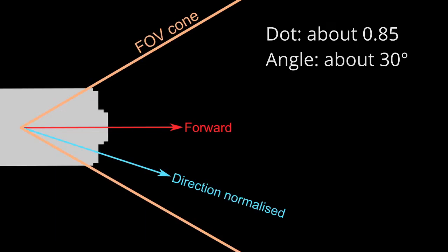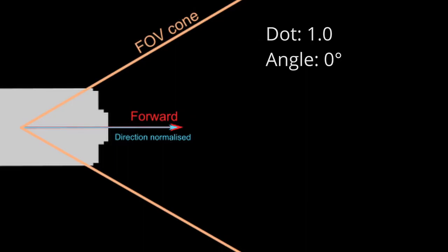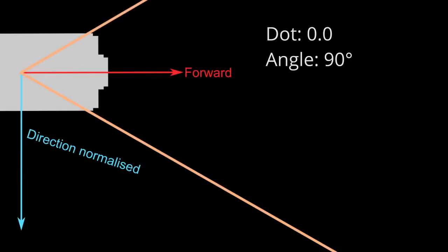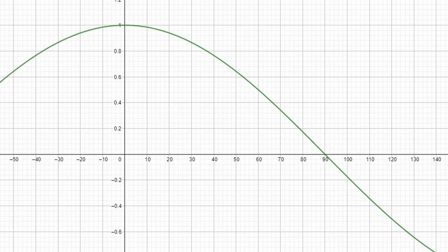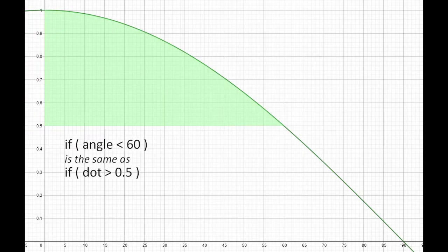Essentially, we are checking how similar the forward vector is to the direction vector, because that is a good way to measure the angle. If the vectors are the same, the angle between them is 0 degrees, which is inside the FOV. If they're 90 degrees apart, it's most likely not in the FOV. We chose 0.5 because that's the cosine of 60 degrees. We are looking for all angles less than 60 degrees, and for all of those the dot product is higher than 0.5. Try to draw it on paper to figure this out.